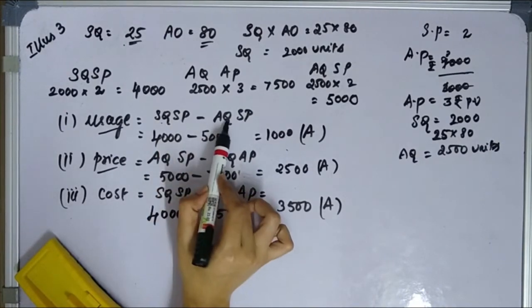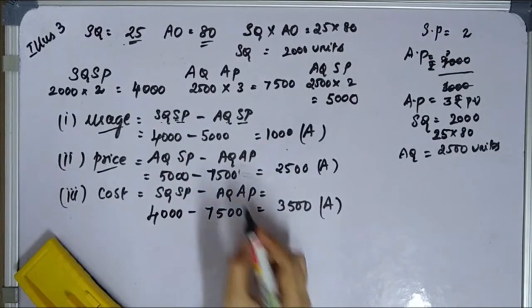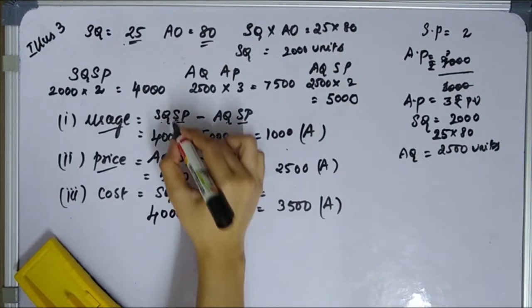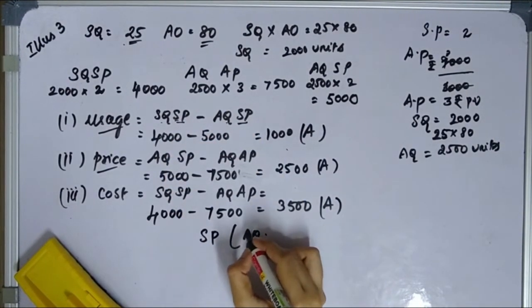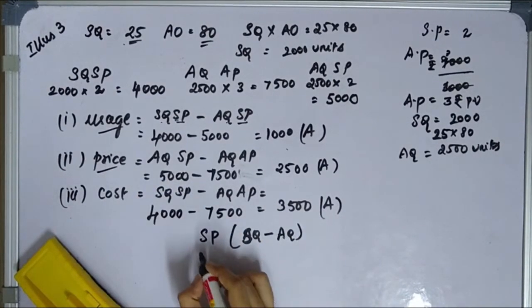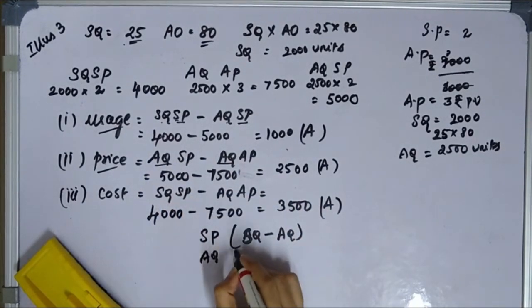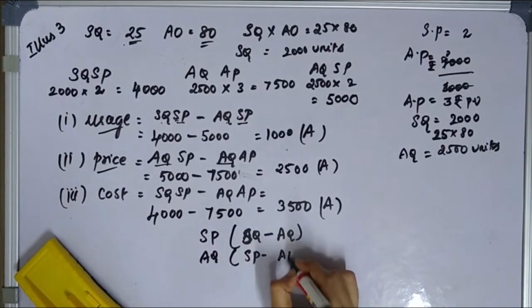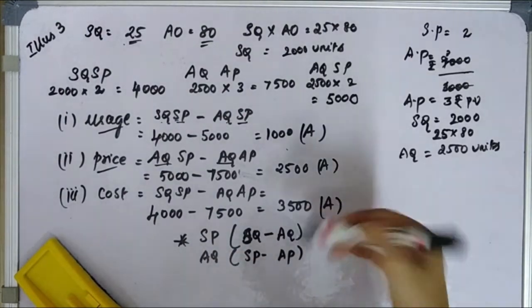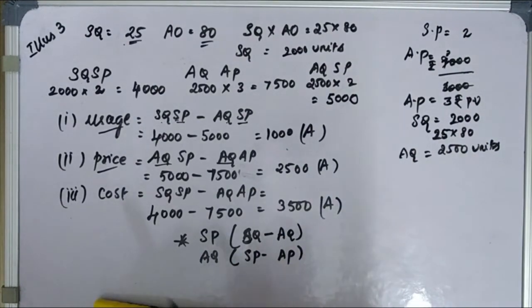This is the quantity change. Standard price is similar. So how do we calculate the usage variance? Usage variance is equal to SQ minus AQ, multiplied by standard price. If you calculate using the standard price, the quantity difference gives you the variance. If you calculate the standard price this way, it will be easy to determine the variance.